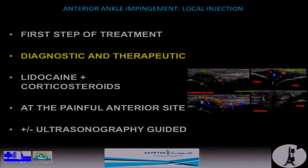The second step and the first step for the treatment is the local injection. When you diagnose an ankle by palpation — anterior medial or anterior lateral impingement — the first step is to make a local injection at the site of the painful palpation to confirm your diagnosis, and in one-third of cases to have a therapeutic effect. In nearly 30% of cases, with this injection, the patient will have complete relief of symptoms and you will treat your patient without any operation, without anything else. You can do this on your own or with ultrasonography guidance to be sure you are in the correct localization.